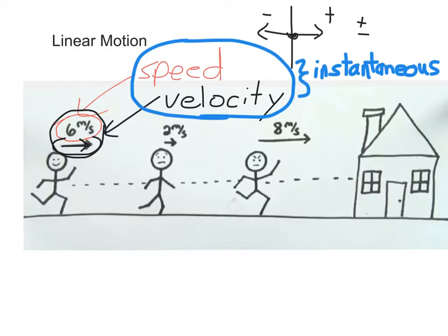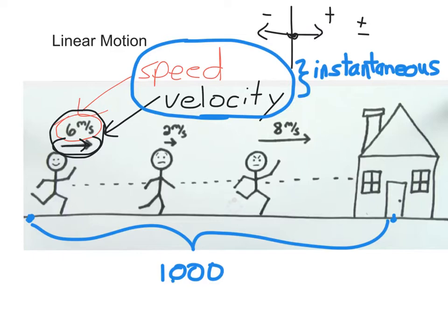But there's another way to measure speed. Let's say that I know that the total distance from here to here, the door of my house, is a thousand meters.